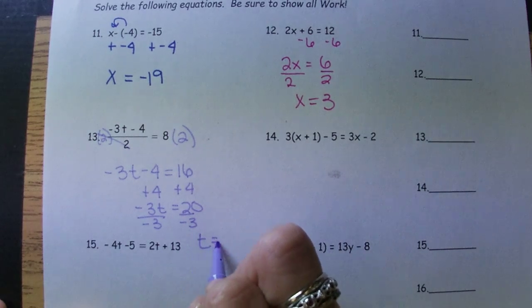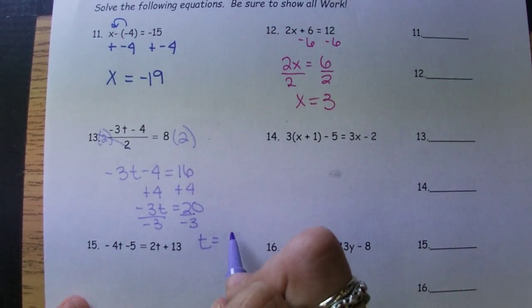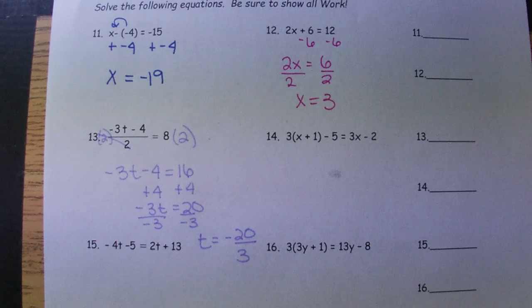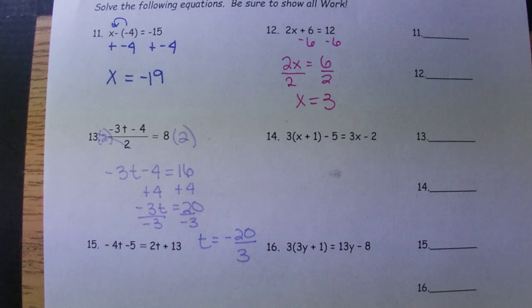So you can turn this into a decimal, but it's going to be a repeating decimal. So you at least need to make sure that you have it non-rounded. So you can have negative 6.6 repeating. You would have to have the repeating bar. Negative 6 and 2 thirds or just negative 20 over 3 is fine.